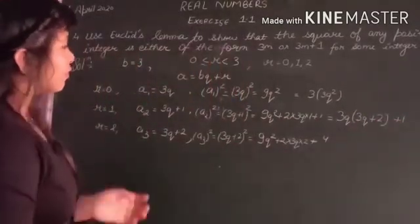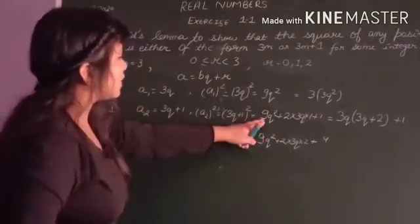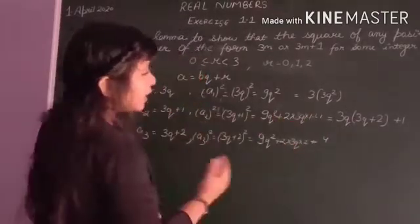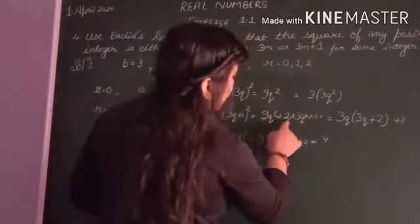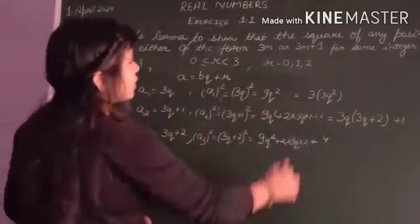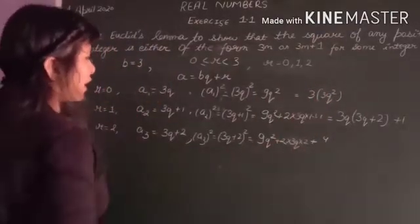See if you are confused how we have done this. We have taken 3 common from 9q square, from 6q, and we have kept plus 1 as it is.